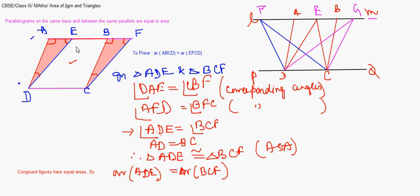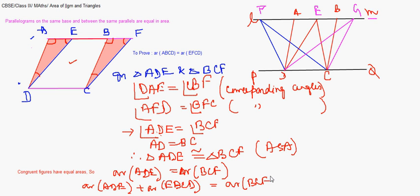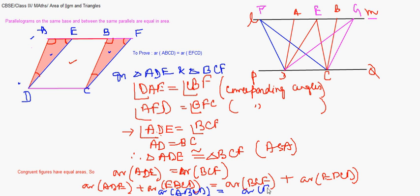Now, adding the area of EBCD to both sides: area ADE plus area EBCD equals area BCF plus area EBCD. This gives us area ABCD equals area EFCD, thereby proving that the two parallelograms on the same base and between the same parallels have equal area. Let's move on to another question.